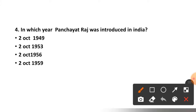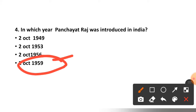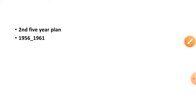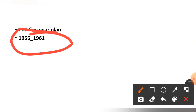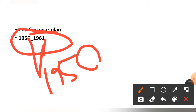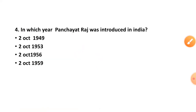Question number four: In which year was Panchayat Raj introduced in India — October 1949, 1953, 1956, or 1959? The correct option is 1959, in the second Five Year Plan. The second Five Year Plan was from 1956 to 1961, and Panchayat Raj system was introduced in 1959.